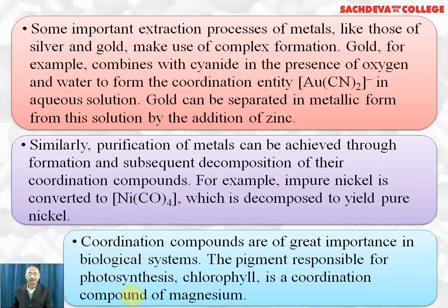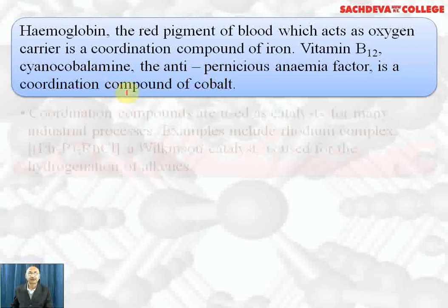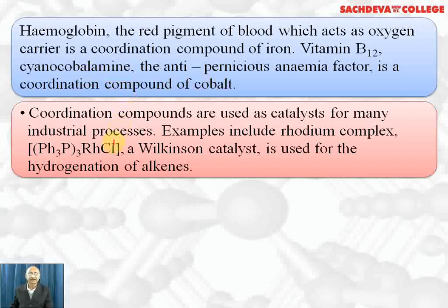Chlorophyll, the pigment responsible for photosynthesis, is a coordination compound of magnesium. Hemoglobin, present in red blood cells and responsible for oxygen transport, is a coordination complex of iron. Vitamin B12, cyanocobalamin, is the anti-pernicious anemia factor — its deficiency leads to pernicious anemia — and it is a coordination compound of cobalt.